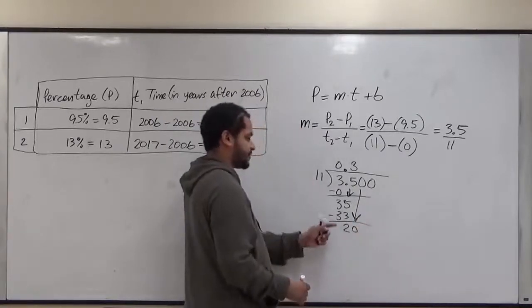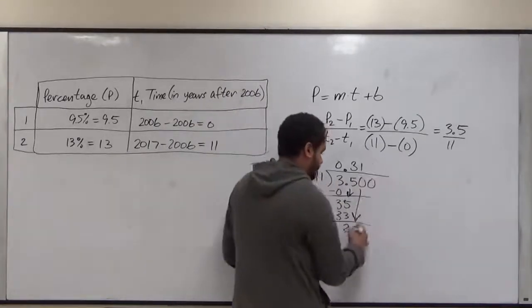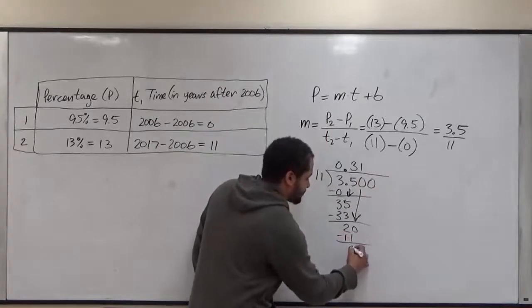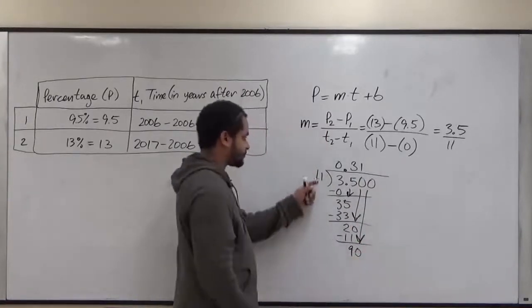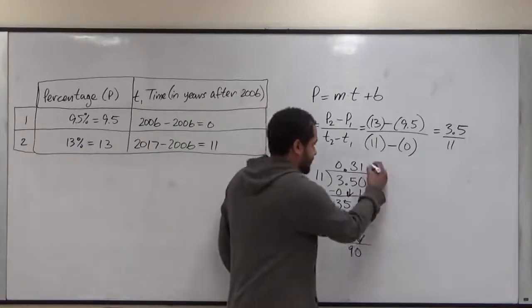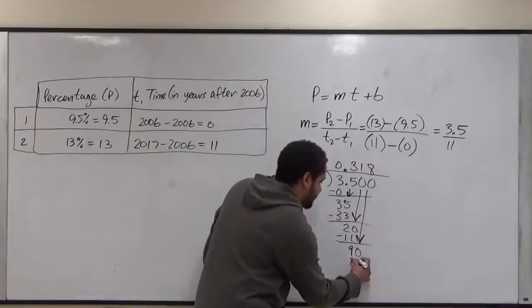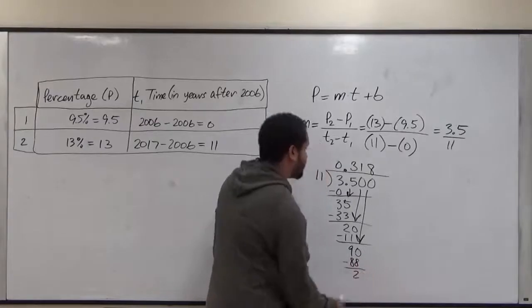That's a 20. 11 goes into 20 just once. That's 11. Subtract again. This becomes a 9. And this becomes 90. 11 goes into 90 eight times. And that's 88. And we're going to stop right here. This remainder is 2. It doesn't matter for the remainder.